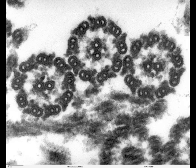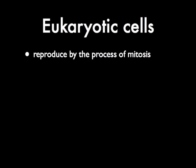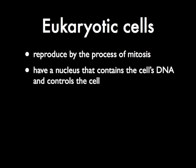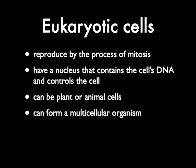Eukaryotic cells. Eukaryotic cells reproduce by the process of mitosis. They have a nucleus that contains the cell's DNA and controls the cell. These cells can be either plant or animal cells. Eukaryotic cells are the only type of cells that can form a multicellular organism.